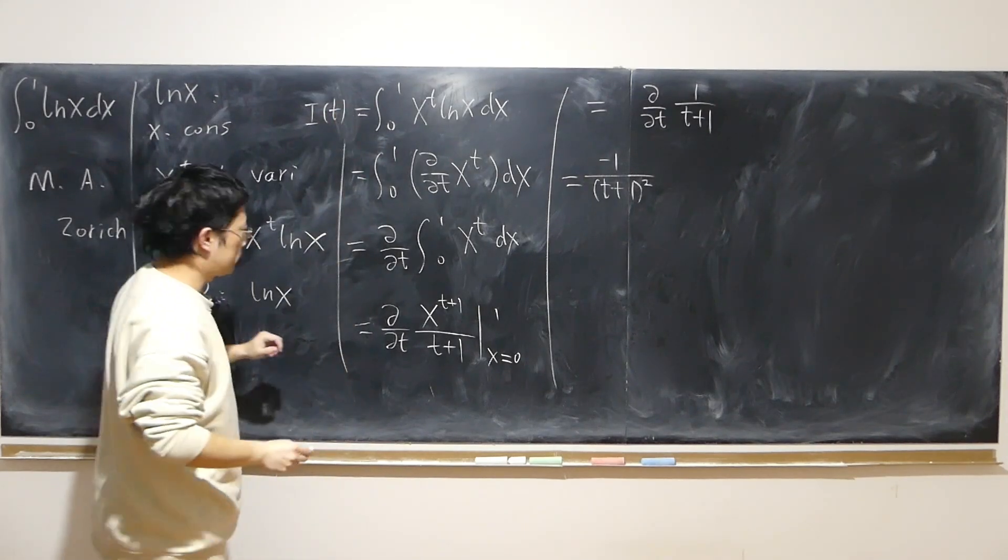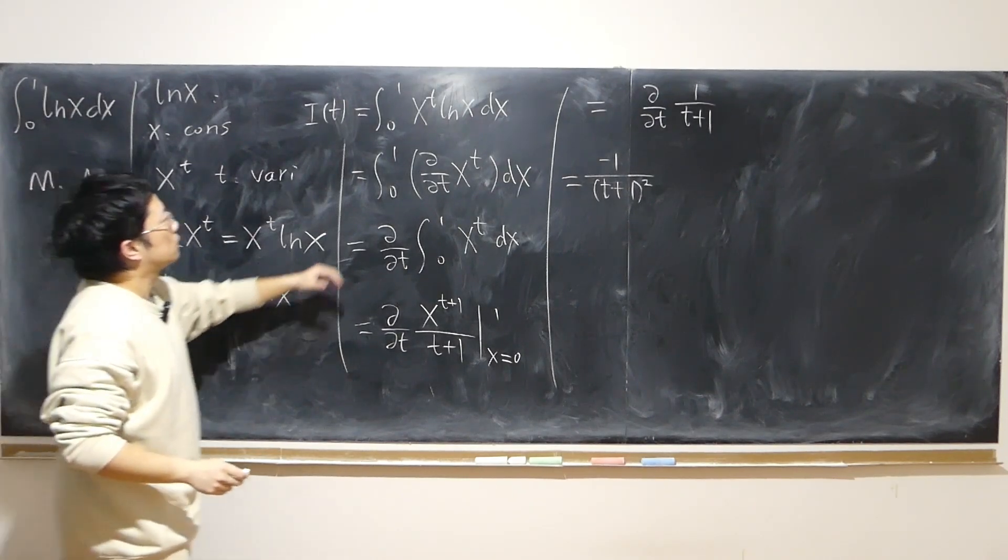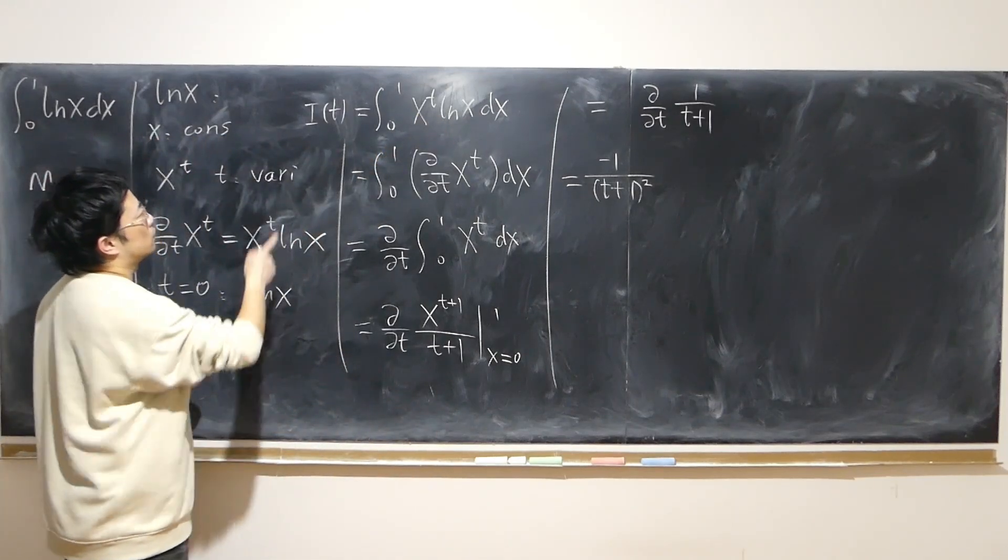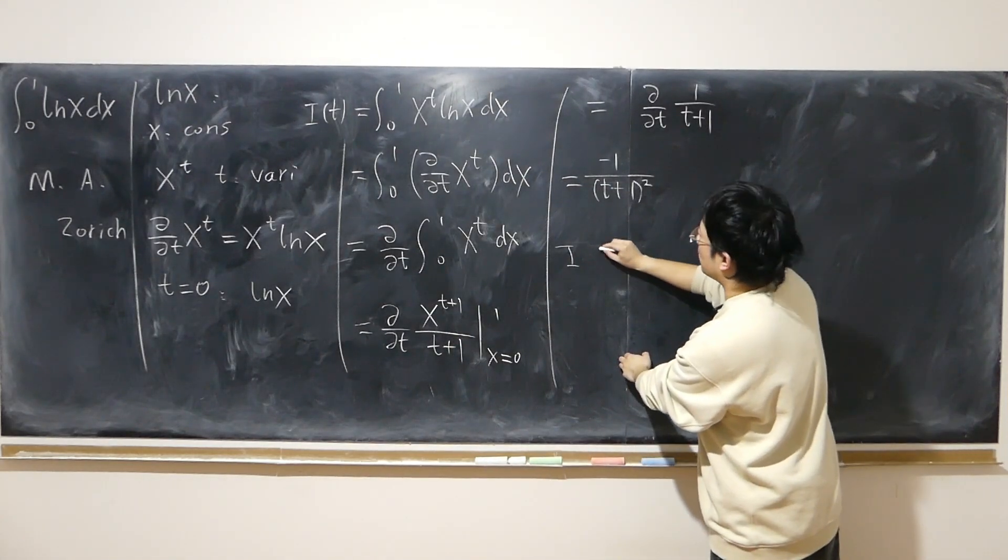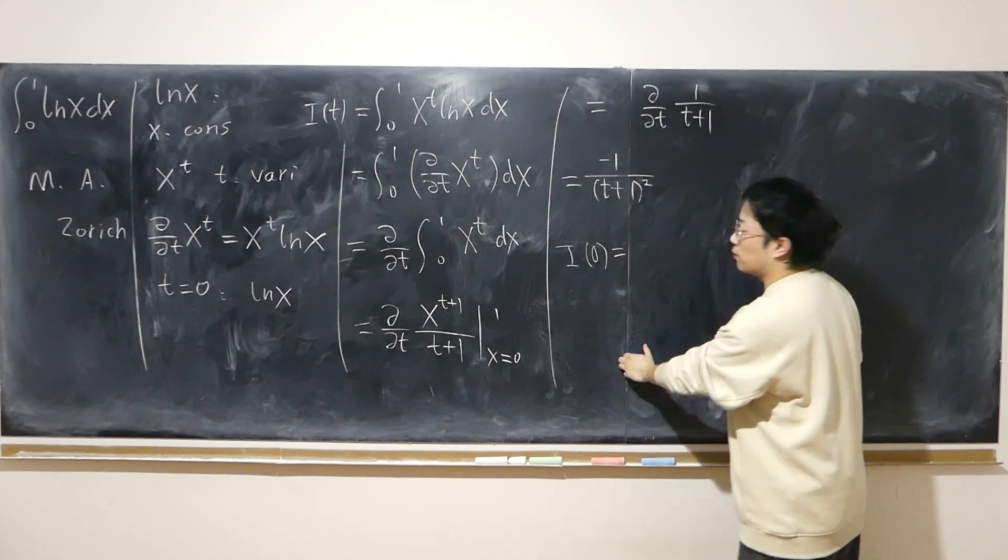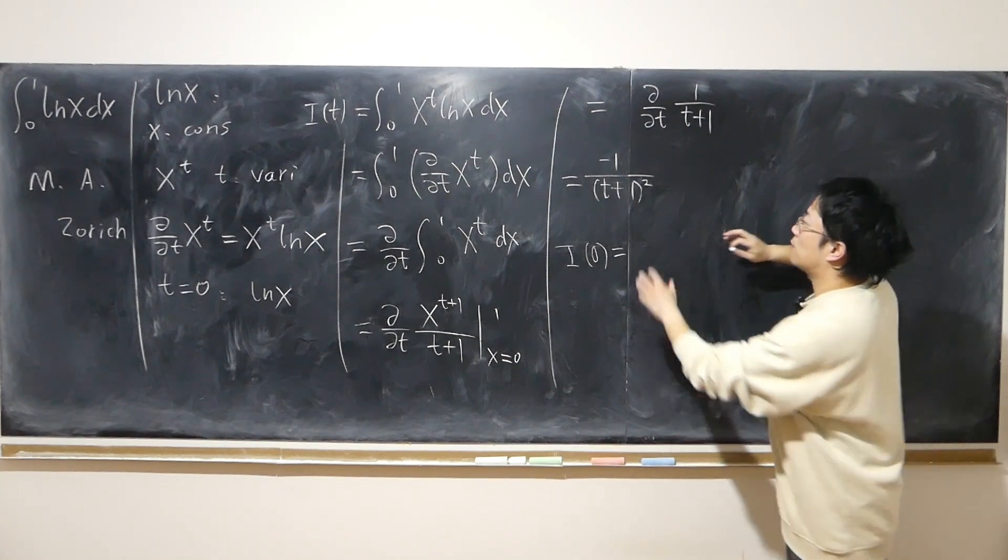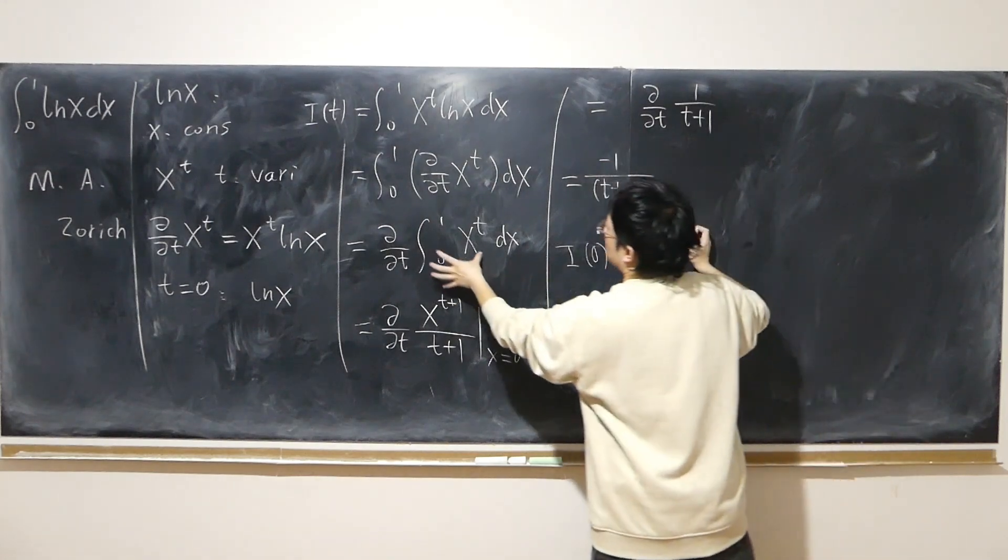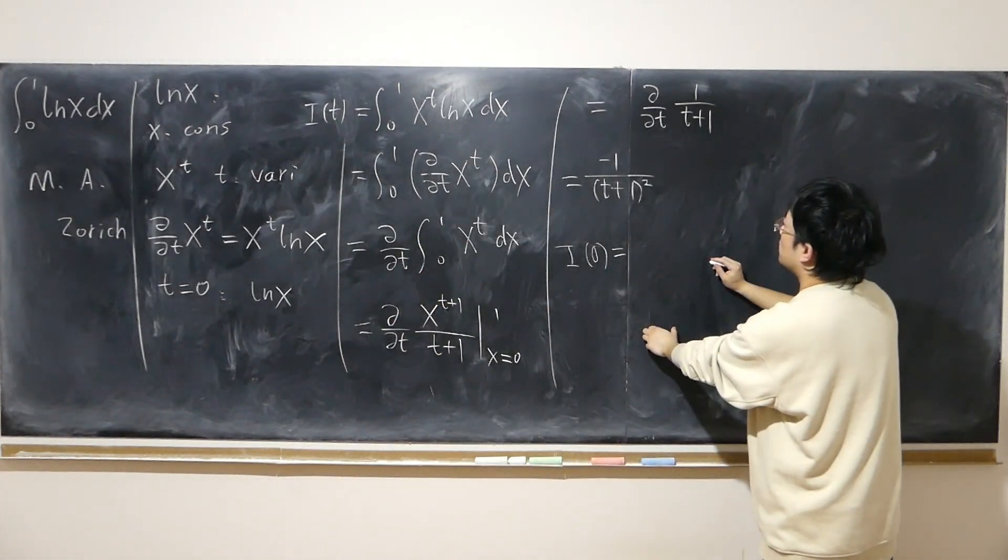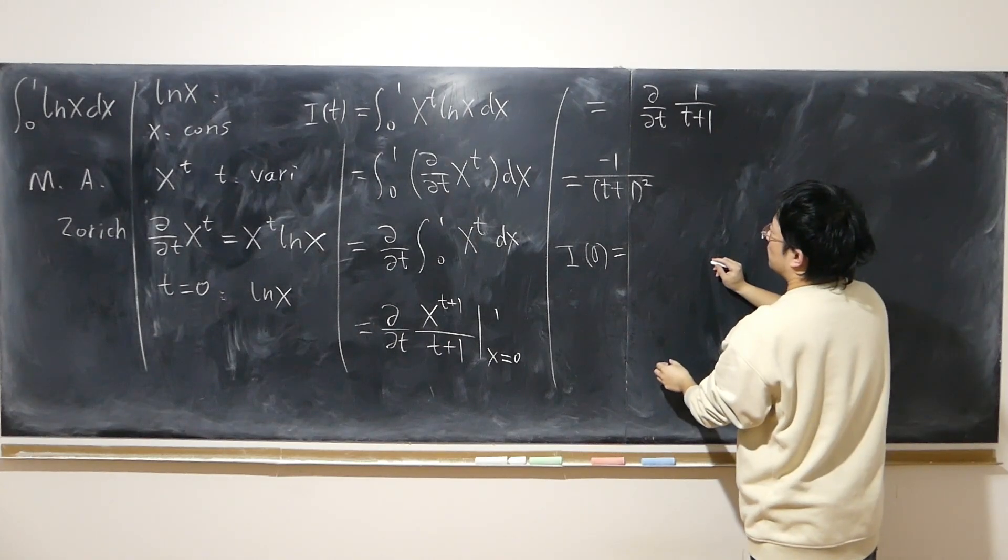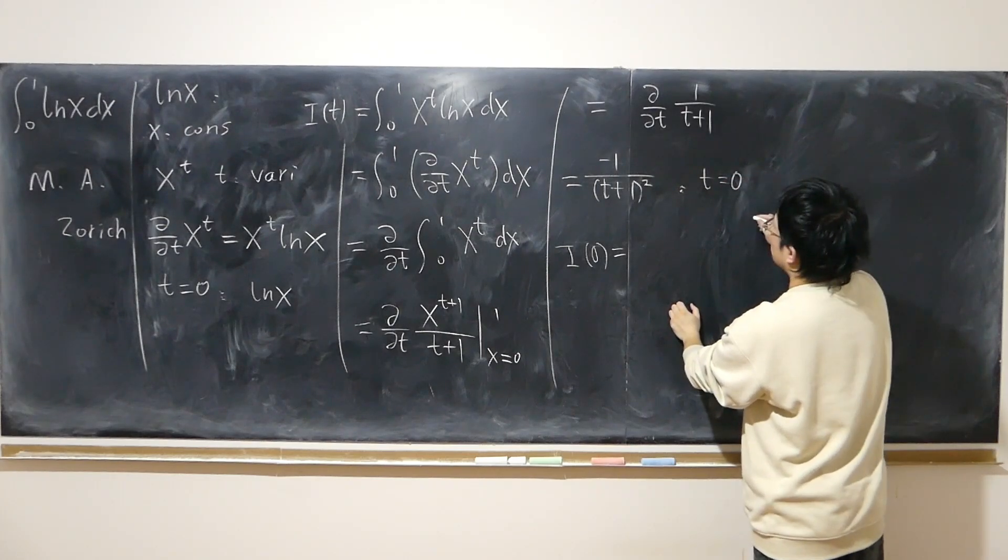Now, like I said, as long as I let t equal to 0, I immediately have log x. Immediately the goal integral. So all I need to do is to find out I(0). Then I'm done. So like I said, this is the ultimate result after I did all the work. So t equal to 0. Negative 1.